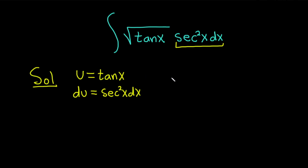So rewriting our integral, we have the integral of, well, instead of tangent, we have u, so it's the square root of u. And instead of secant squared x dx, we just have du. Really cool.